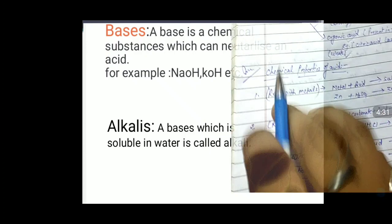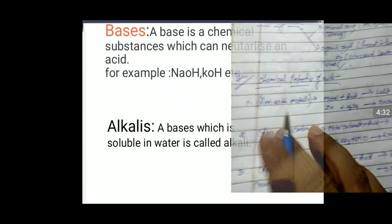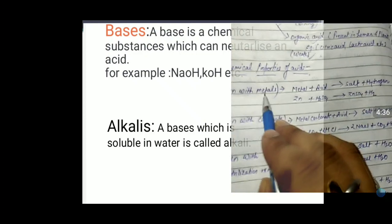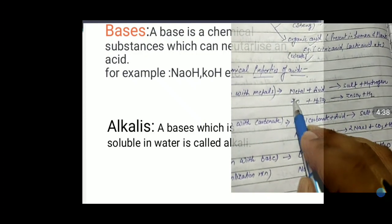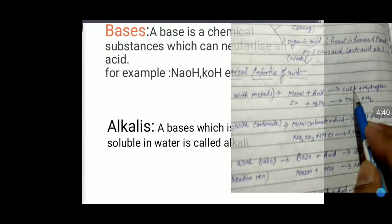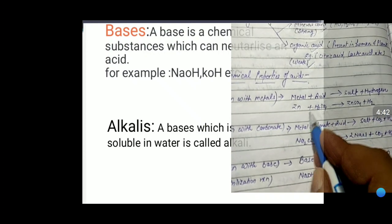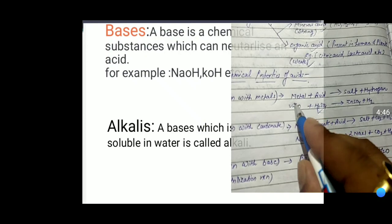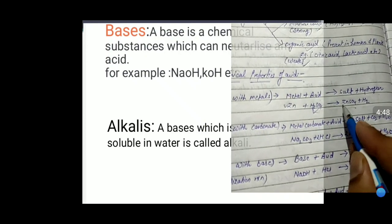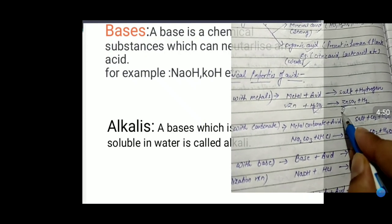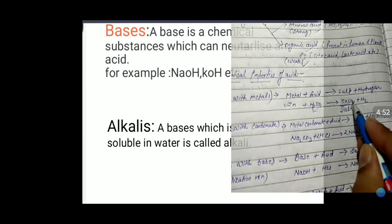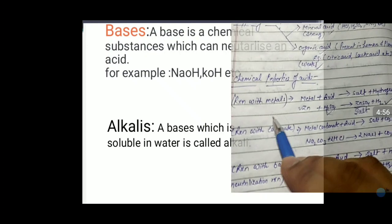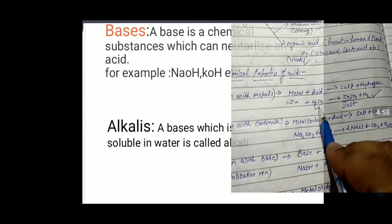Chemical properties of acid. First chemical property: reaction with metal. When an acid reacts with a metal, it forms a salt and releases hydrogen gas. For example, zinc (metal) reacts with H₂SO₄ (acid) to form ZnSO₄ (zinc sulfate, a salt) and evolves hydrogen gas.